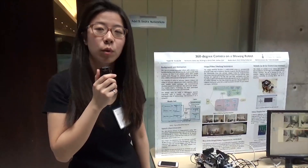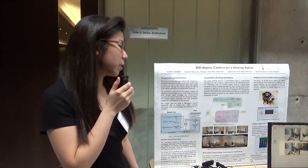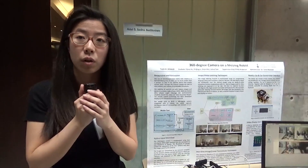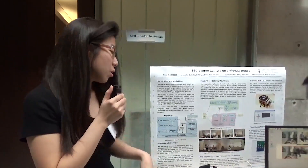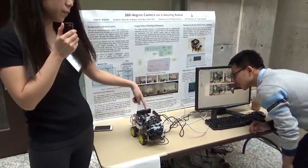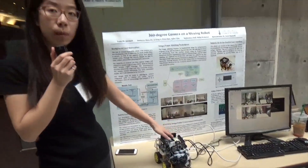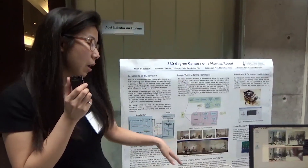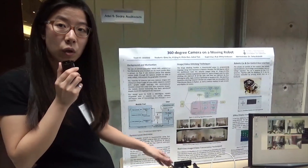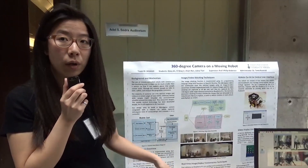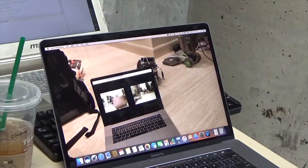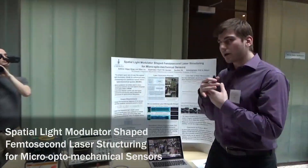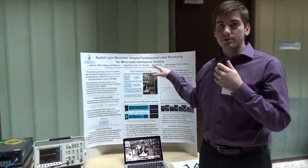Our project is a 360-degree camera on a moving robot. The purpose is to send the robot somewhere that nobody wants to go or humans couldn't reach. We're using four different normal cameras on this robot to capture images of all the surroundings. The robot can be controlled wirelessly, so we can send it anywhere we want. We can see the real-time stitched result and also record video and play it back.